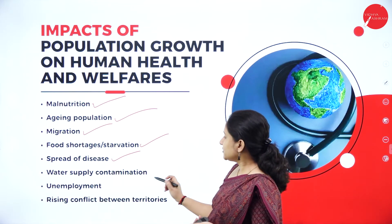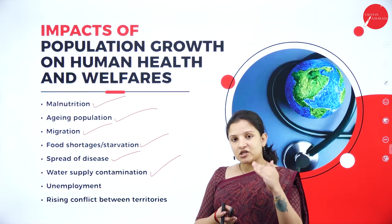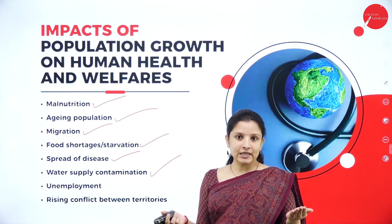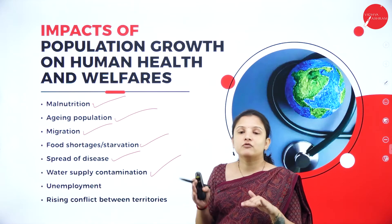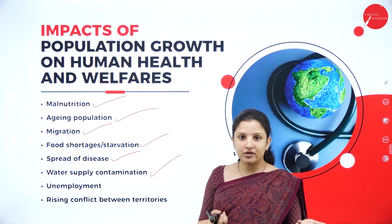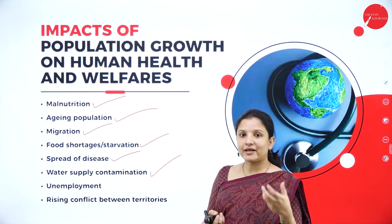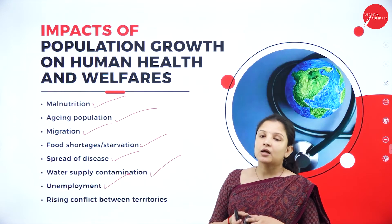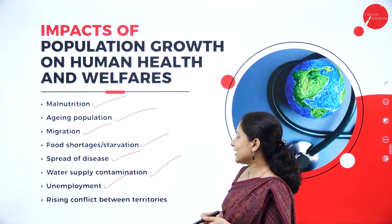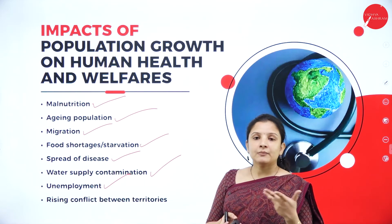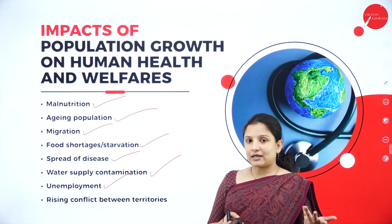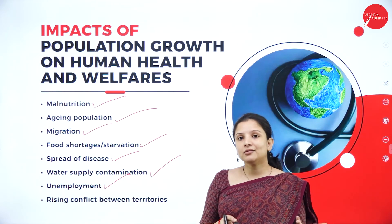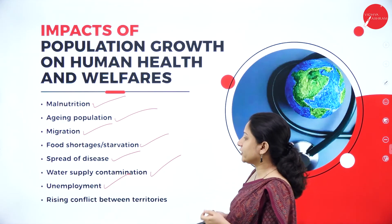It will also cause water supply contamination. As fresh water levels come down and water scarcity occurs, contamination of water increases because the flow of water is reduced. Next, it will lead to unemployment. People will become jobless because of overpopulation, and additionally machines are replacing people, making it very difficult for youngsters to find jobs, leading to unemployment and a chain of different problems.